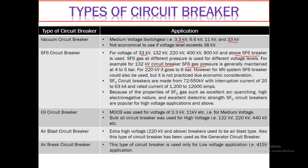For SF6 circuit breakers, considering the properties of SF6 gas, they are quite useful where the voltage level is very large. For example, for a 132 kV circuit breaker the SF6 gas pressure is generally maintained at 4 to 5 bar; for 220 kV it goes to 6 bar. SF6 circuit breakers are made for 75 to 550 kV with interrupting current of 20 to 63 kA and rated current of 1200 to 12,000 amperes.